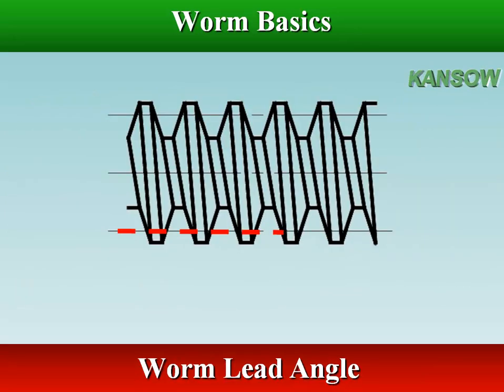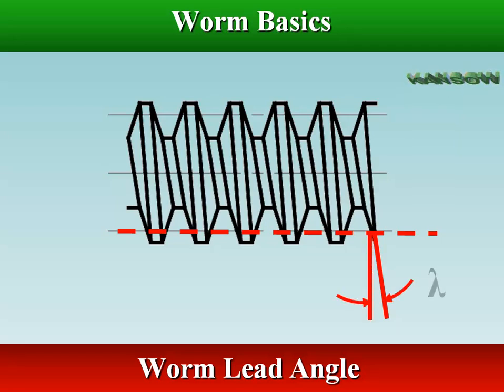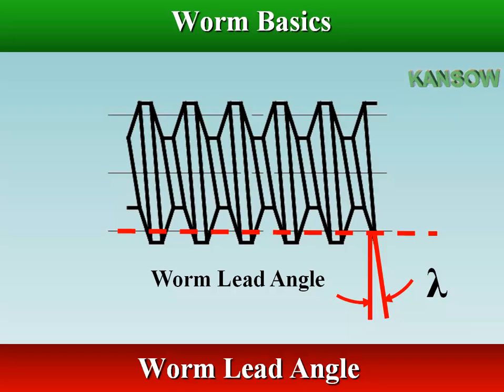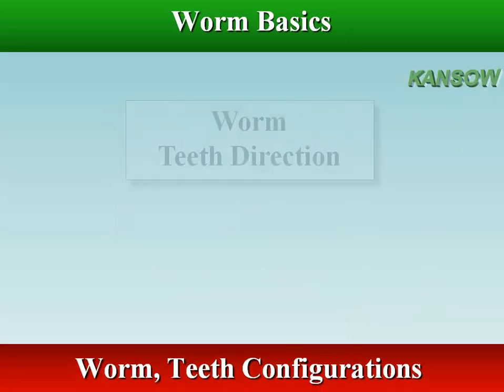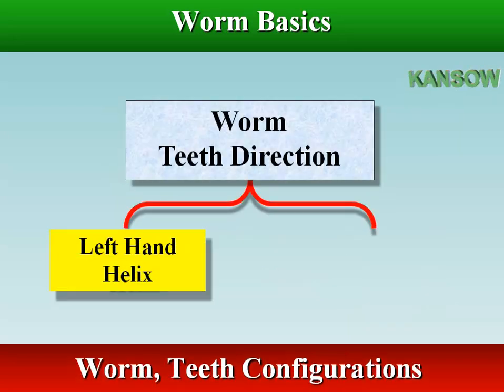Lead angle is the angle between the tangent to the thread helix on the pitch cylinder and the plane normal to the axis of the worm. The threads of the worm may be left-handed or right-handed.